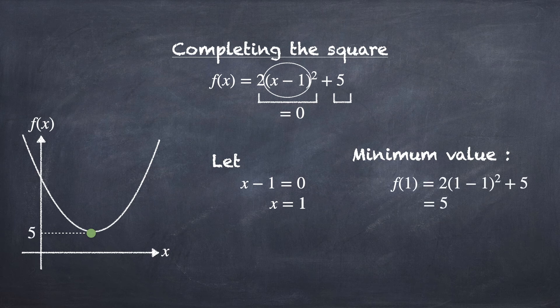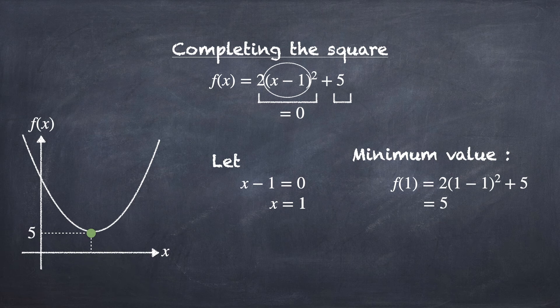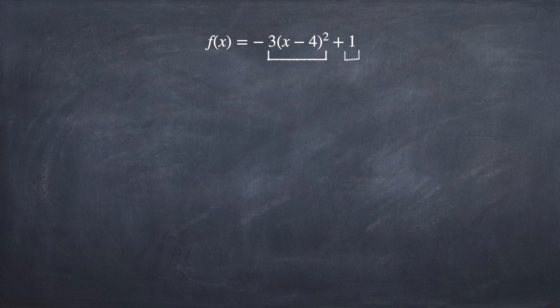5 is the minimum value of this quadratic function and this happens when x is equal to 1. Let's look at another example, f(x) equal to -3(x - 4)² + 1.